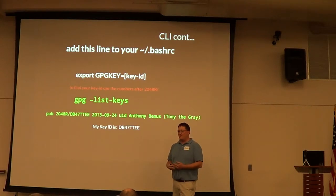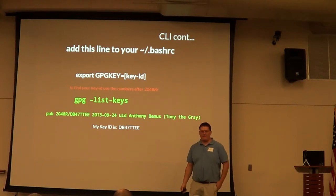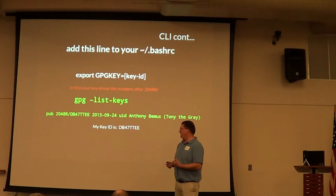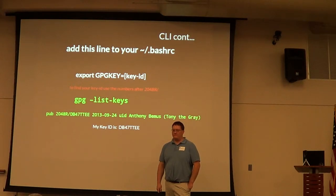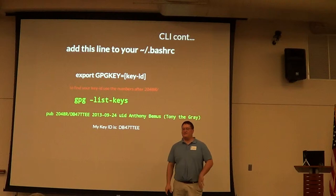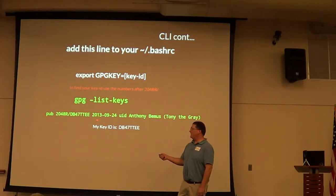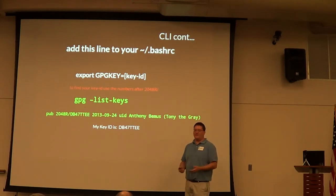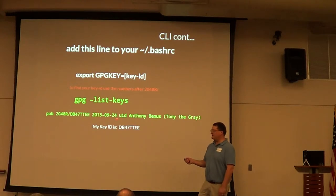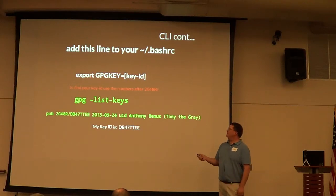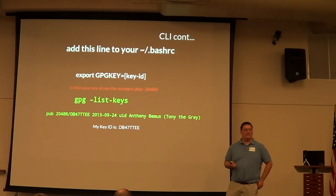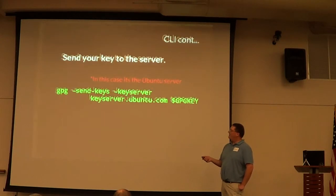You can have one key per email address or put multiple emails on one key, and your keyring holds all your keys. What I'm saying is that with this exported key ID set in your environment, every time you use the command line, all you have to do is put the dollar sign GPG key and it automatically uses that specific key. It's like identifying and setting your default key, similar to what I'm showing on the command line right here.